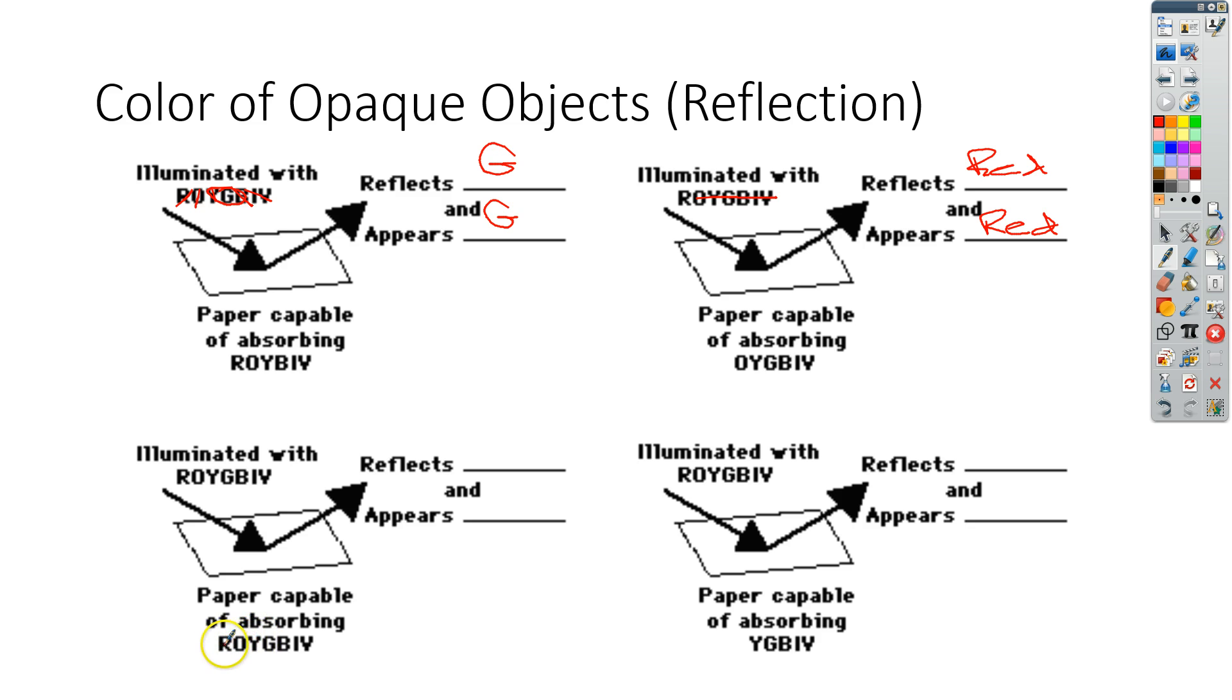Next one, same type of thing. This one is a little bit different. Notice that it's ROYGBIV. It is capable of absorbing every single color.